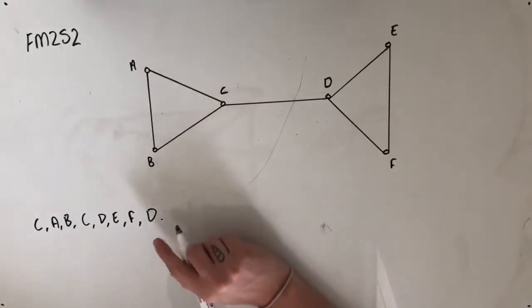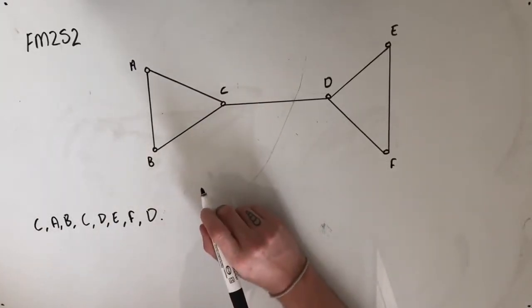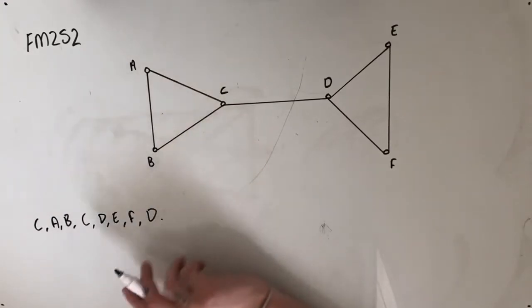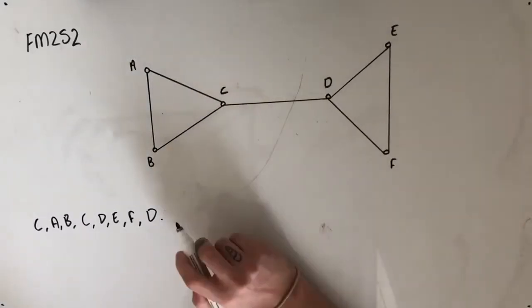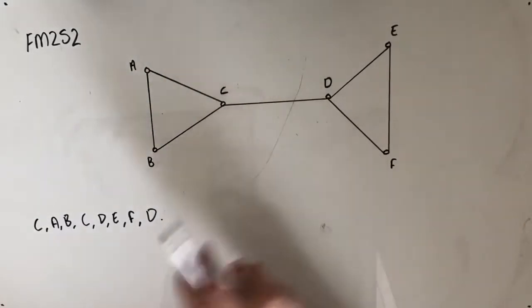Hey guys, welcome to question FM 252 of the Further Maths Fortify Study Guide. This question reads: the graph below shows the streets connecting six roundabouts A, B, C, D, E, and F. And we're given this graph here.